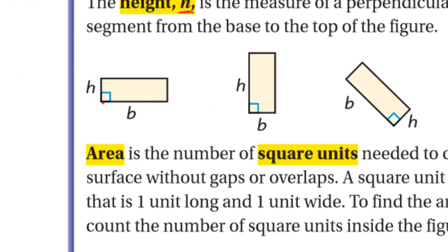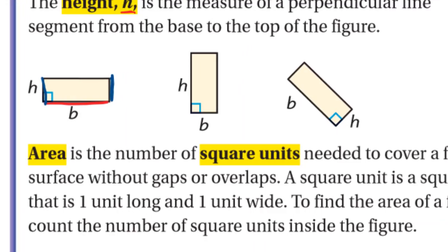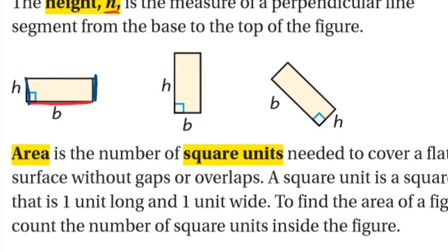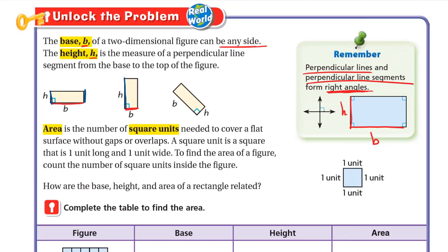For example, if this is the base, what is perpendicular to it? We have this one, so this one will be the height — or also this one may be the height. Here, if this is the base, what is perpendicular to it? This side — so the length of this side is the height. And here, if this is the base, what is perpendicular to it is this side, so this side will be the height.